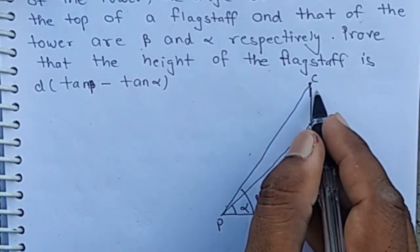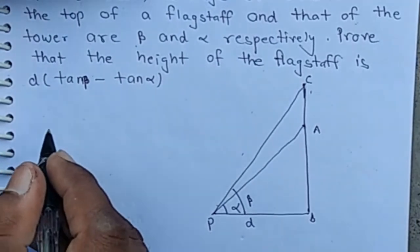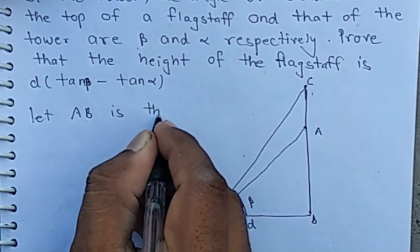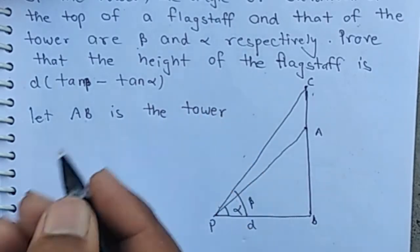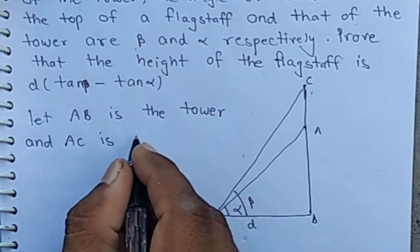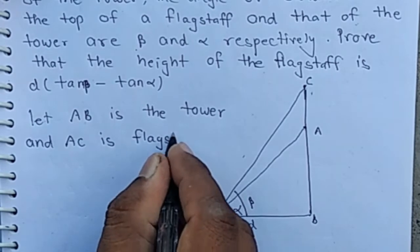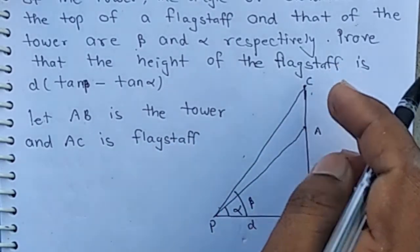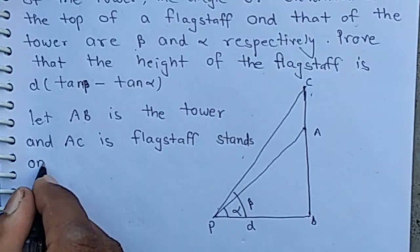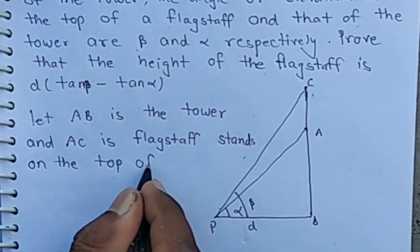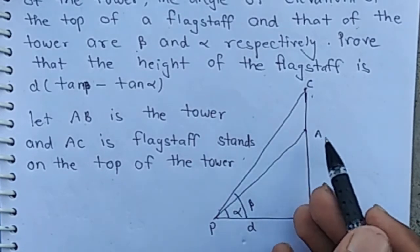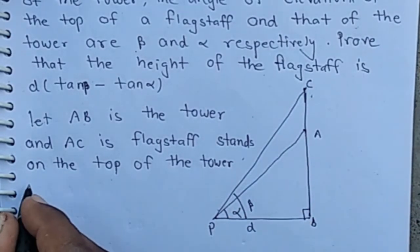We have to find the height of the flagstaff, meaning we have to find the height of AC. Let AB be the tower and BC be the flagstaff standing on the top of the tower. There are two right angle triangles: triangle ABP and triangle CBP.